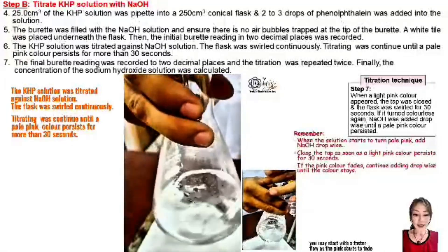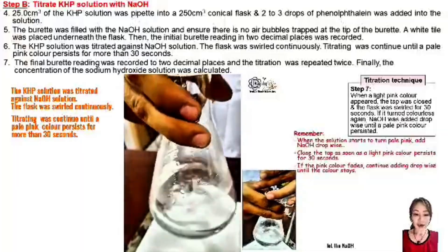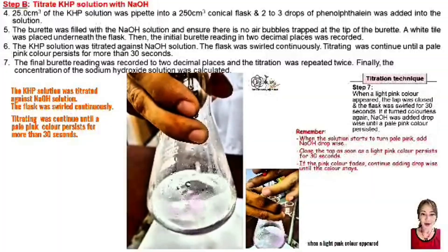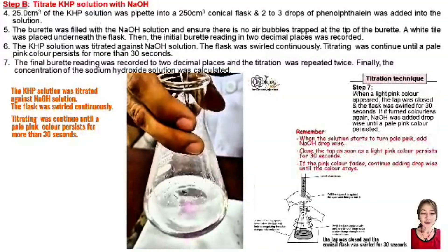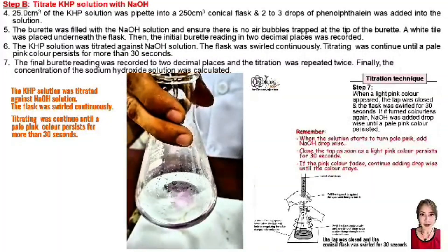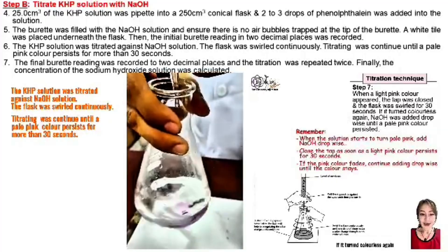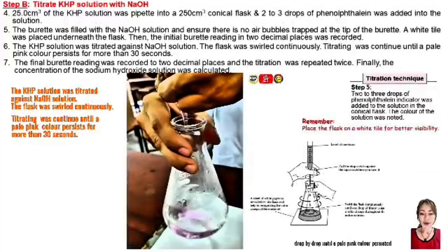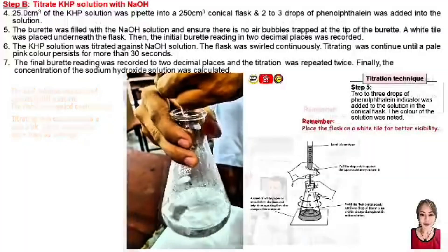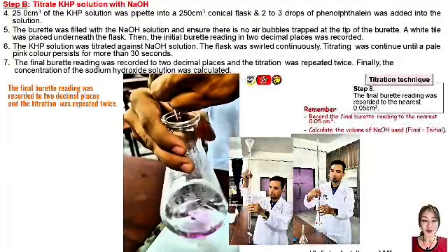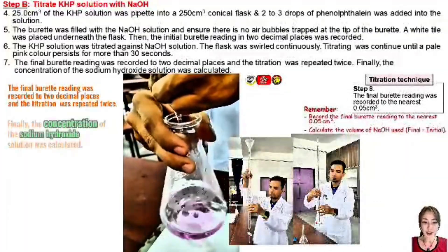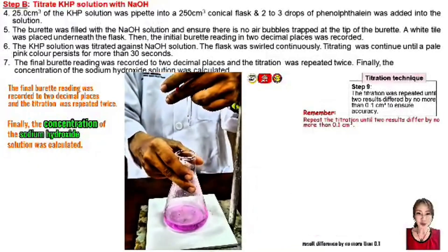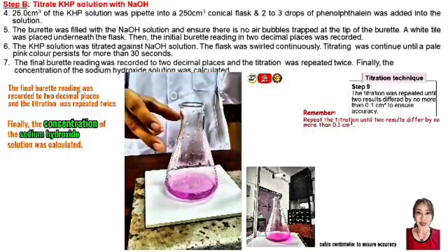Let the NaOH drip in one drop at a time. When a light pink color appears, close the tap and swirl the conical flask for 30 seconds. If it turns colorless again, add NaOH drop by drop until a pale pink color persists. Record the final reading to the nearest 0.05 cm³ from the burette. The titration is repeated until two results differ by no more than 0.1 cm³ to ensure accuracy.